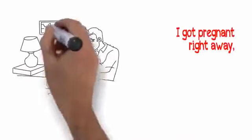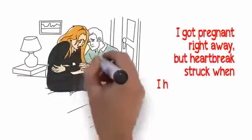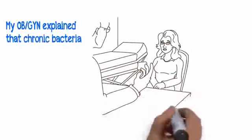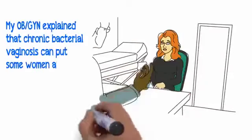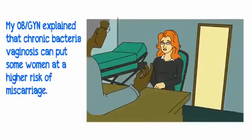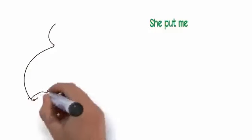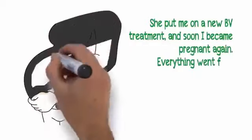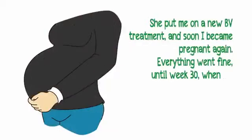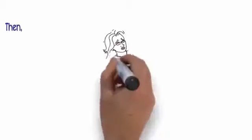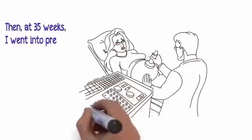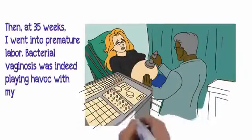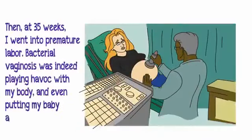I got pregnant right away, but heartbreak struck when I had a miscarriage a few weeks later. My OBGYN explained that chronic bacterial vaginosis can put some women at a higher risk of miscarriage. She put me on a new BV treatment and soon I became pregnant again. Everything went fine until week 30 when my BV symptoms suddenly increased. Then at 35 weeks, I went into premature labor. Bacterial vaginosis was indeed playing havoc with my body and even putting my baby at risk.